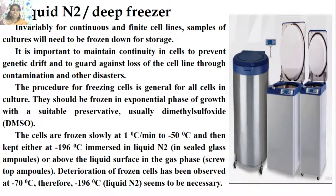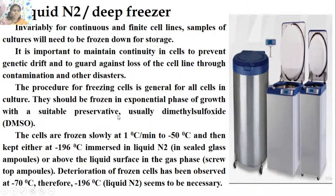Liquid nitrogen freezers are needed for continuous and finite cell lines, where samples of culture will need to be frozen for longer duration storage. It is important to maintain continuity in cells to prevent genetic drift and guard against loss of cell lines through contamination. Cells should be frozen in the exponential phase of growth with preservatives, usually DMSO (dimethyl sulfoxide), at 1 degree per minute to minus 50 degrees, then stored at minus 196 degrees in liquid nitrogen. Deterioration of frozen cells has been observed at minus 70 degrees, making minus 196 degrees necessary for deep freezing or cryopreservation.